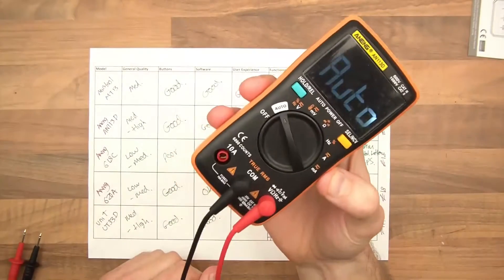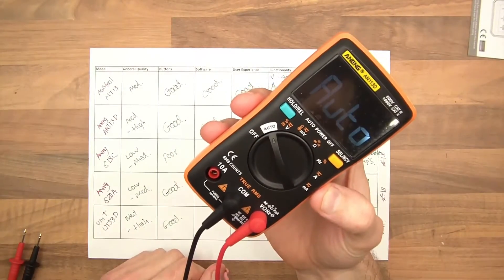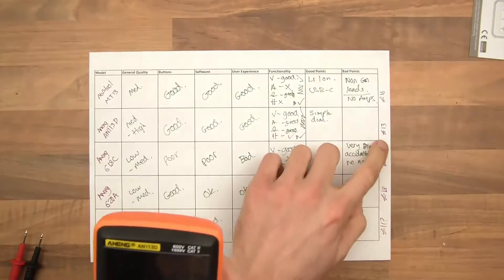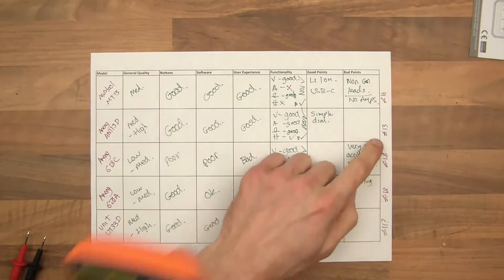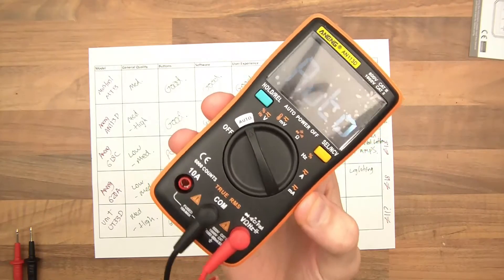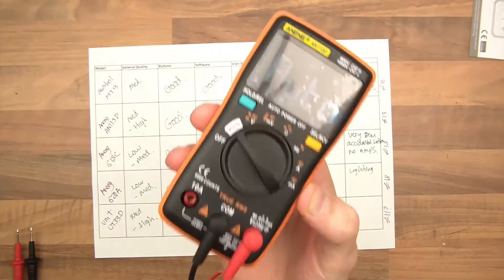The next one is this one. This is the Anang AM113D. This is a really good multimeter for the price. So this is £13. And this genuinely is a really good one. In fact, this is the best of them all, I would say.